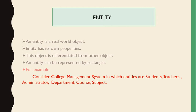Those entities — students, teachers, administrators, department — have their own properties. For example, a department has a name, and departments are distinguished from other objects by using that property. These are examples from a college management system, and these are the entities within it.